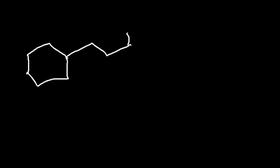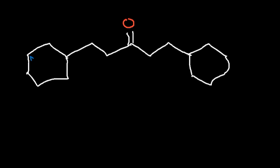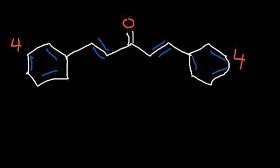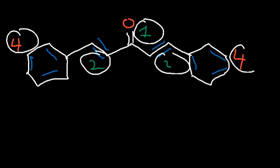Let's try one more example. Go ahead and calculate the IHD value of this particular compound. Looking at the left, the ring has a value of 1, and each double bond in the ring has a value of 1. Three double bonds in one ring — the benzene ring — has a value of 4. This benzene ring also has a value of 4. The triple bonds have a value of 2. And the double bond in the carbonyl group has a value of 1. So 4 + 2 = 6, plus 1 is 7, plus 2 is 9, plus 4 is 13. This molecule has an IHD value of 13.